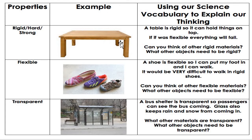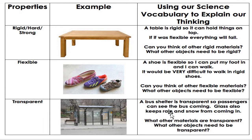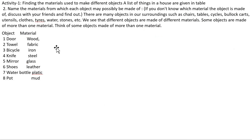For example, if we need something hard and strong, we think of wood — a table is rigid so it can hold things on top; if it were flexible, everything would fall. For flexibility, we think of shoes — a shoe is flexible so you can put your foot in and walk; it would be very difficult to walk in rigid shoes. For transparency, we think of glass — a bus shelter is transparent so passengers can see the bus coming, and glass also keeps rain and snow from coming in.